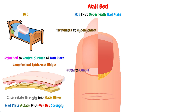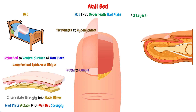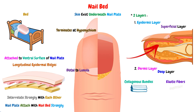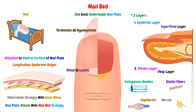Unlike all other skin, the nail bed consists of two layers: the epidermis layer, which is the superficial layer of the nail bed that exists directly underneath the nail plate, and the dermis layer, which is the deep layer made of collagenous bundles and elastic fibers. This dermis layer is richly vascularized with capillaries and nerves, and it is attached to the underlying bone of the distal phalanx.